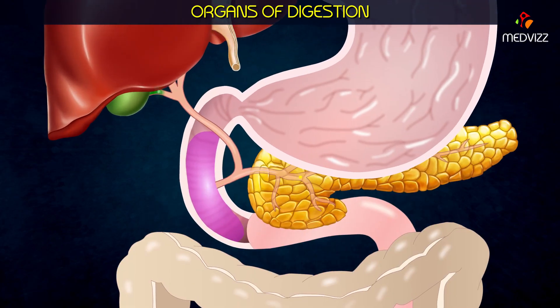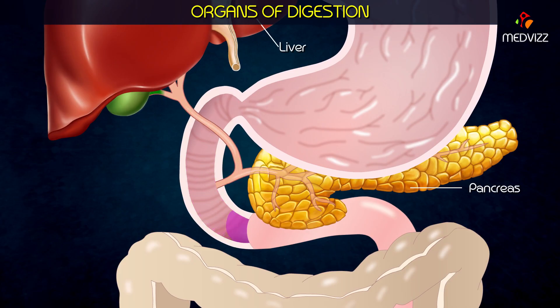Bile from the liver and digestive enzymes from the pancreas empty into the duodenum to aid in digestion. Absorbed nutrients pass from the lumen of the small intestine into blood and lymph.